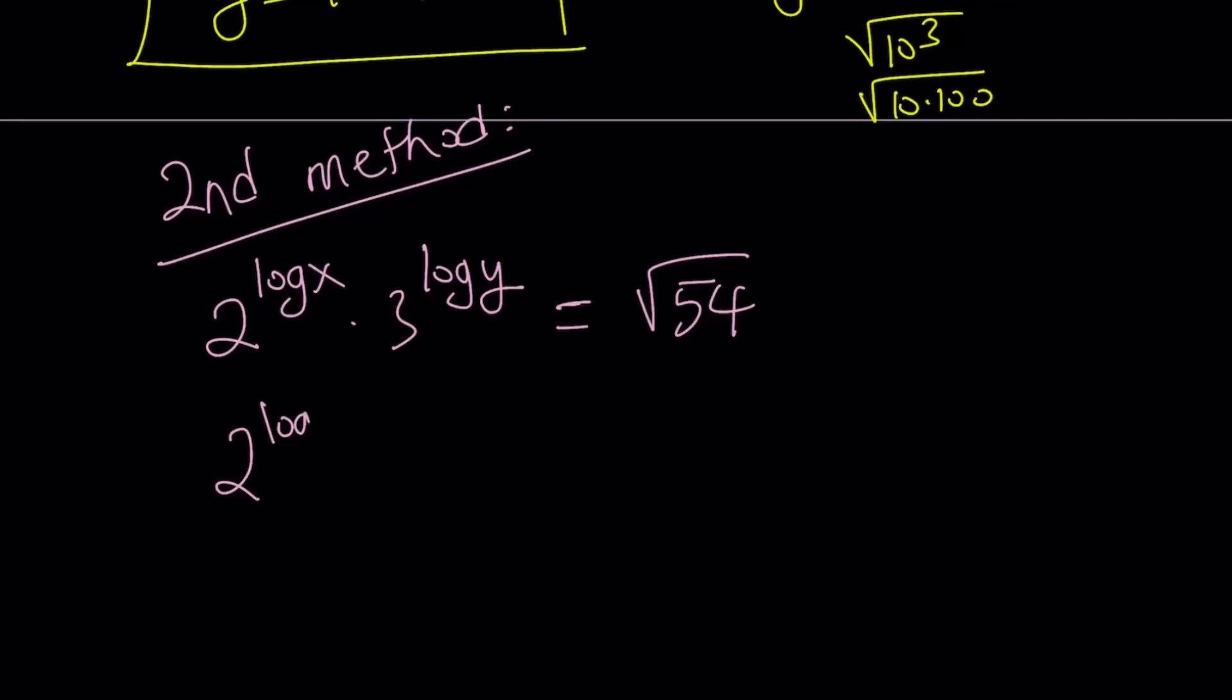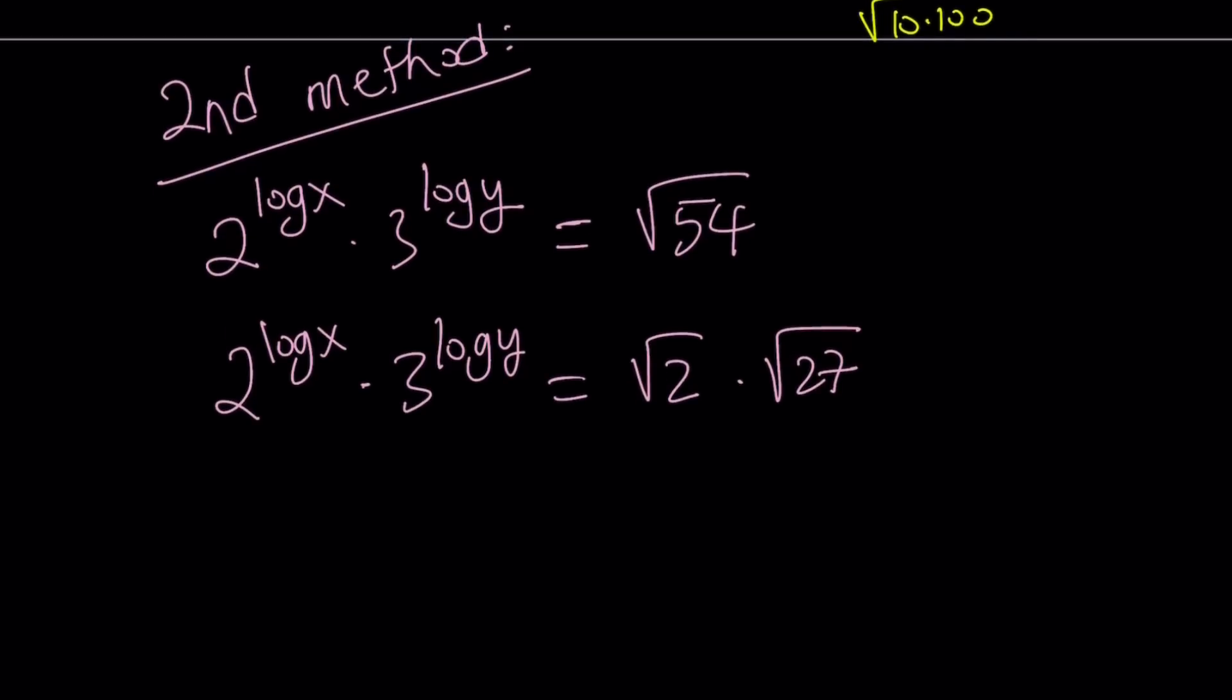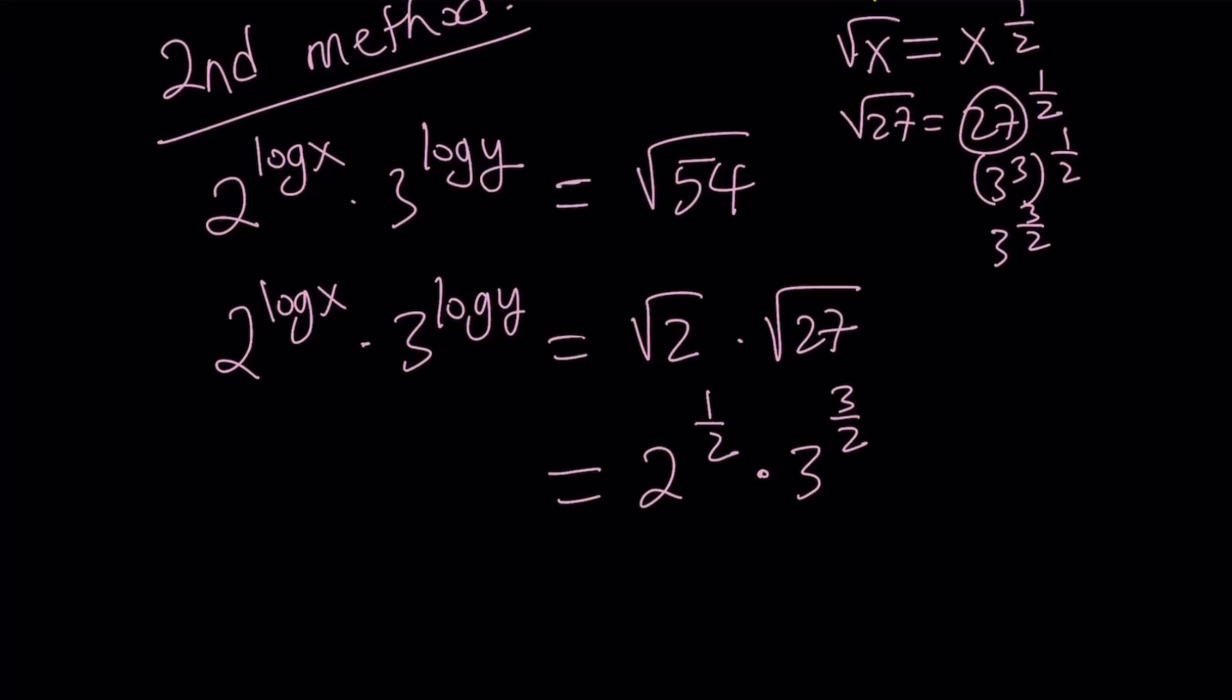Let's go ahead and do it. So we can now replace square root of 54 with square root of 2 times square root of 27. And as you know, we've just done this—square root of 2 can be written as 2 to the power 1 half. And this can be written as square root of 3 to the third, so we can write it as 3 to the power 3 halves. If you didn't see that right away, you can just use the definition: square root of 27 can be written as 27 to the power 1 half. But 27 is 3 to the third, so we can write it as 3 to the third to the power 1 half, which turns out to be 3 to the power 3 halves. So if you can't do it right away, don't worry about it. You can do it in steps.